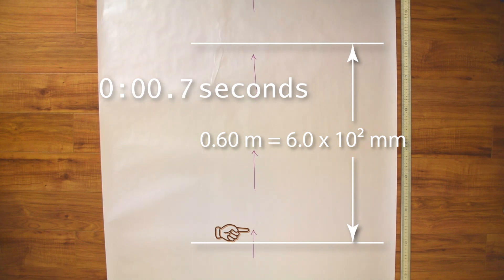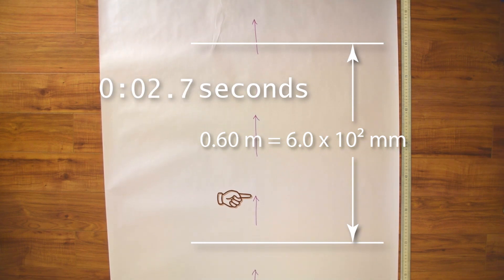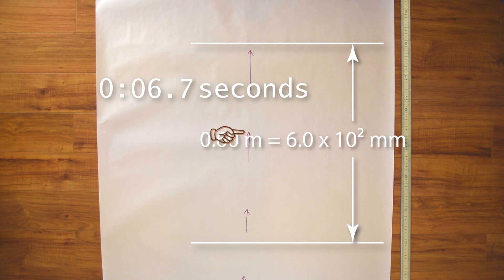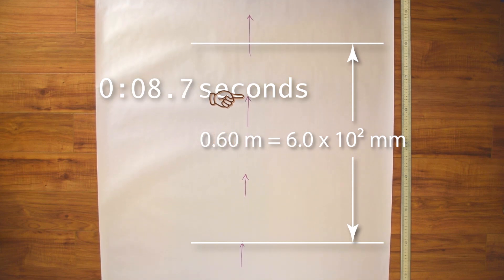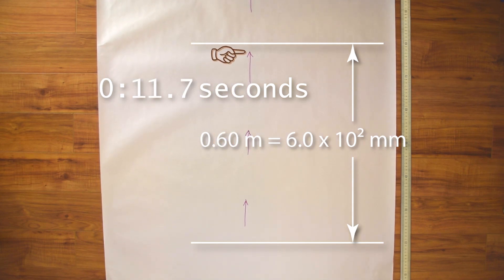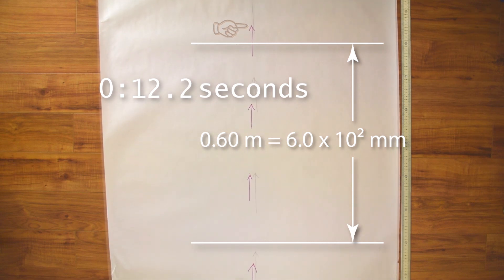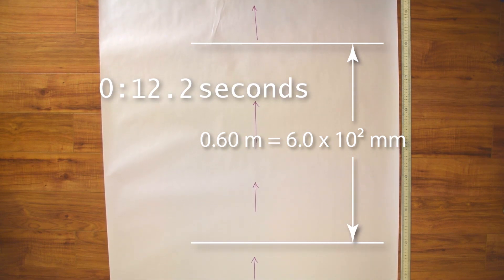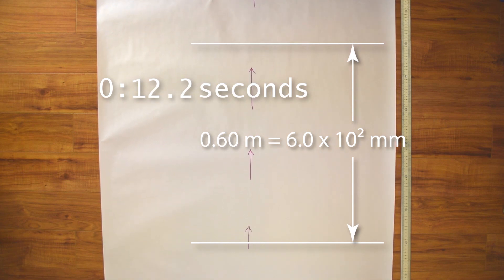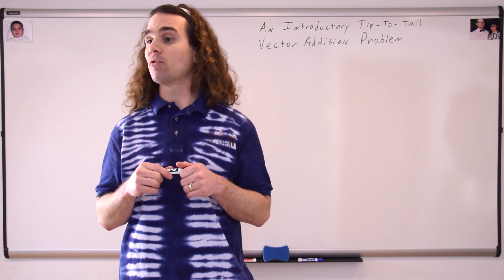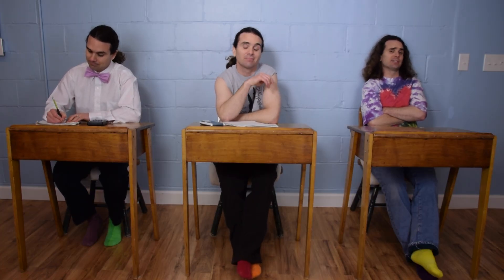Now let's take a look at the moving track. We need to measure the displacement and time for the moving track to determine the velocity of the northward moving track. You can see the track moves 0.60 meters north, or 600 millimeters north, in 12.2 seconds. So we can use our equation for velocity to determine the velocity of the track. Velocity equals displacement over change in time.